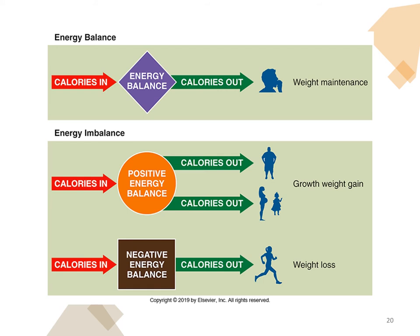In energy balance, calories in equals calories out. A positive energy balance — more calories in than out — results in weight gain. A negative energy balance — burning more calories than consumed — results in weight loss. The macronutrient composition of food matters, but ultimately weight gain and weight loss comes down to calories in versus calories out.